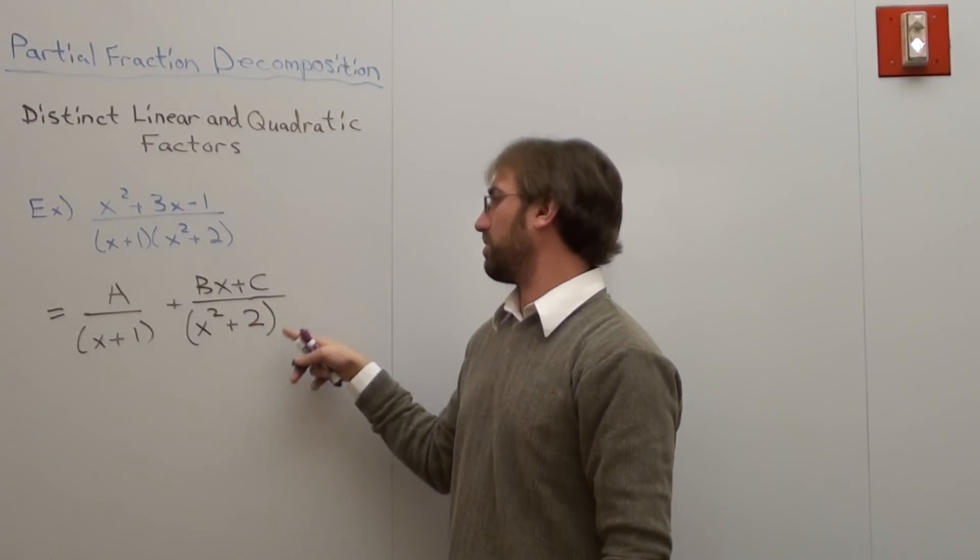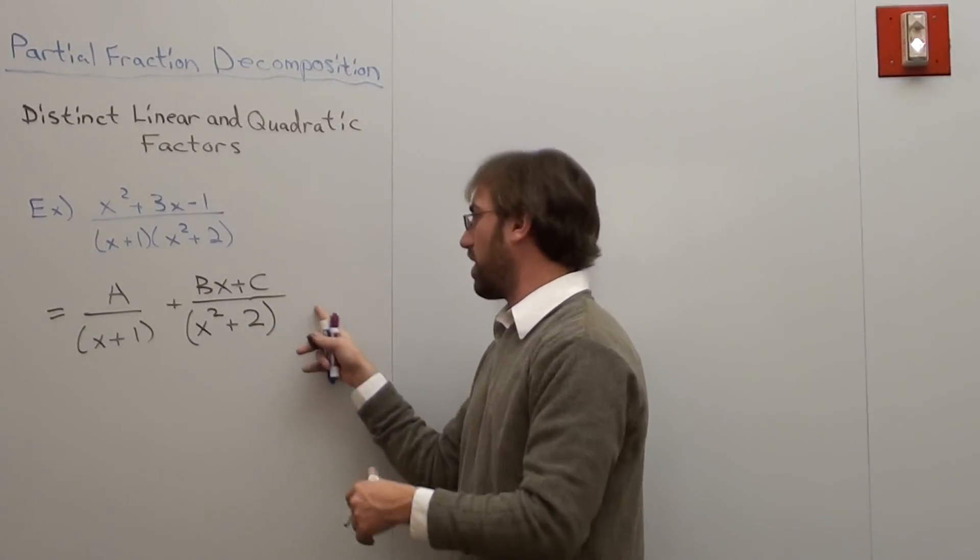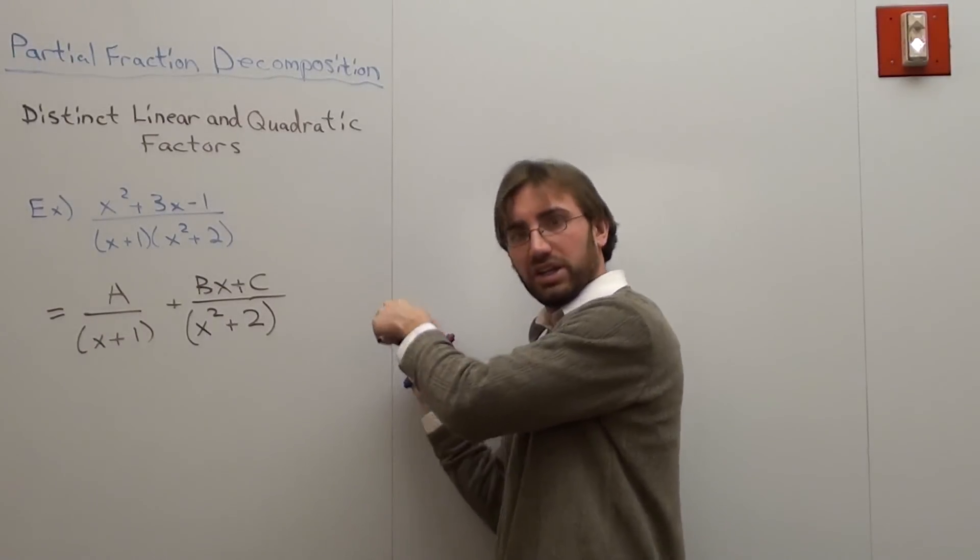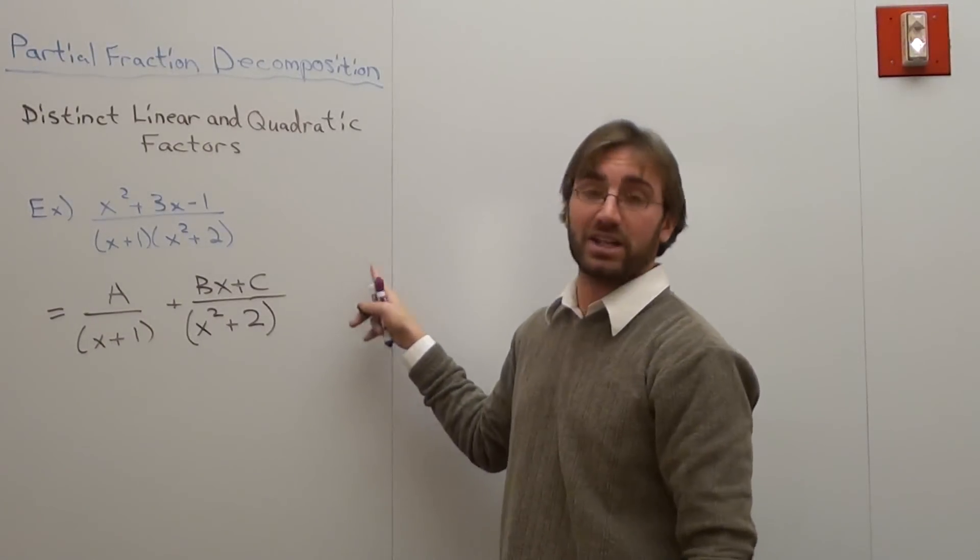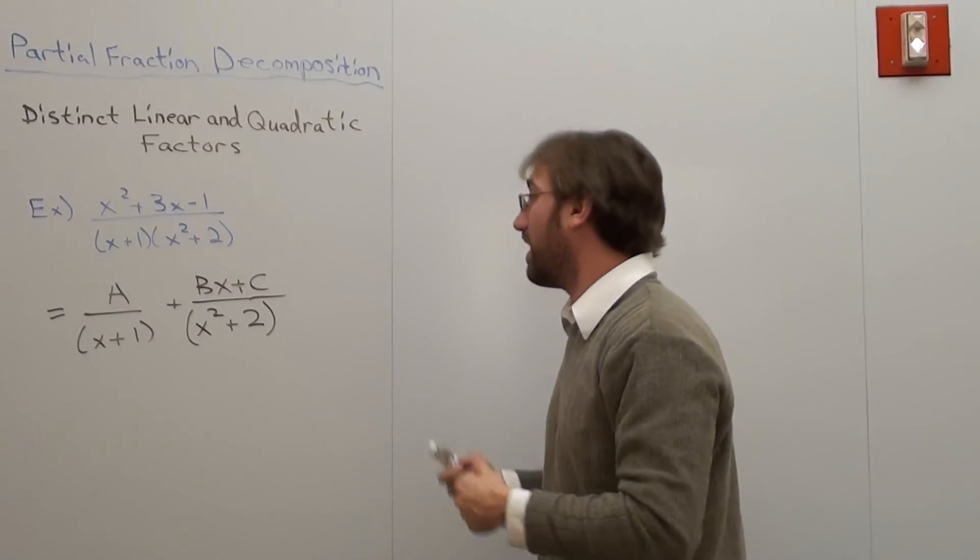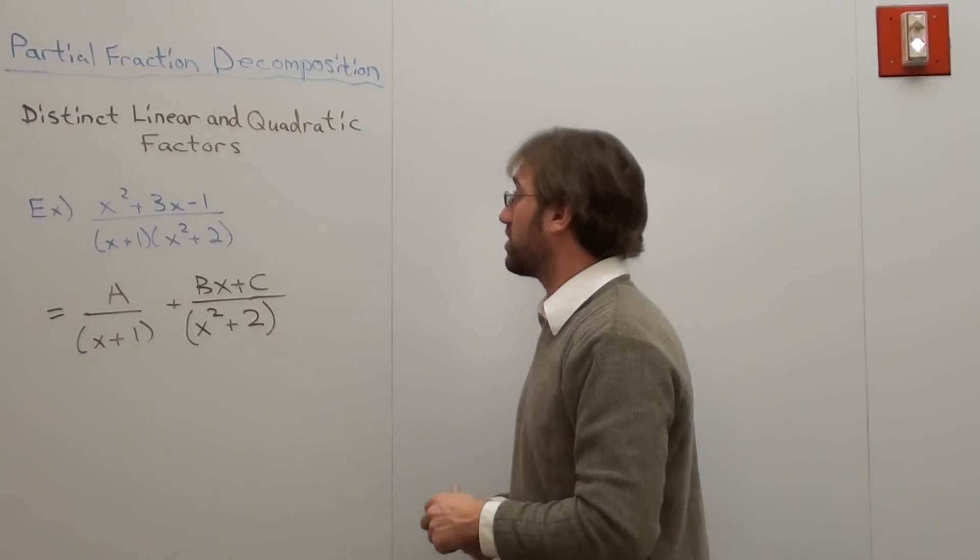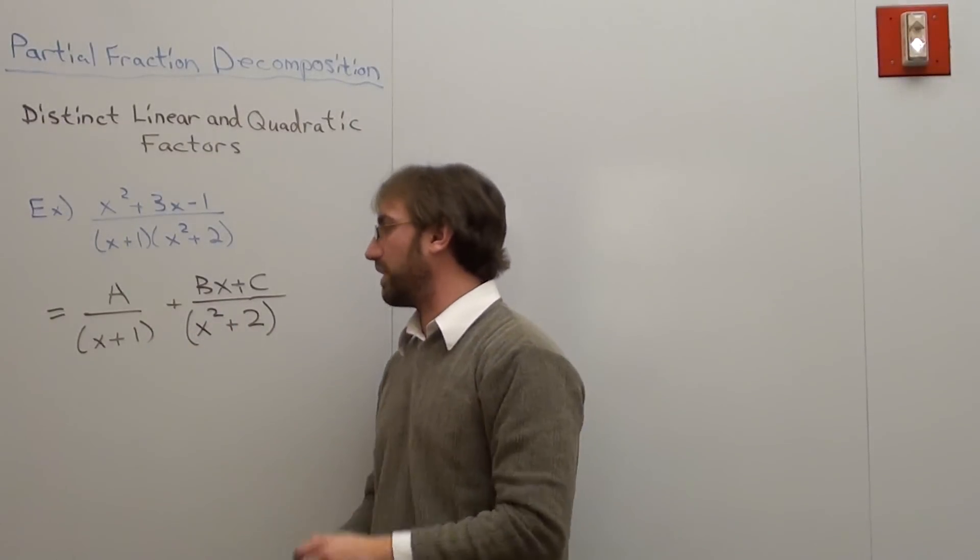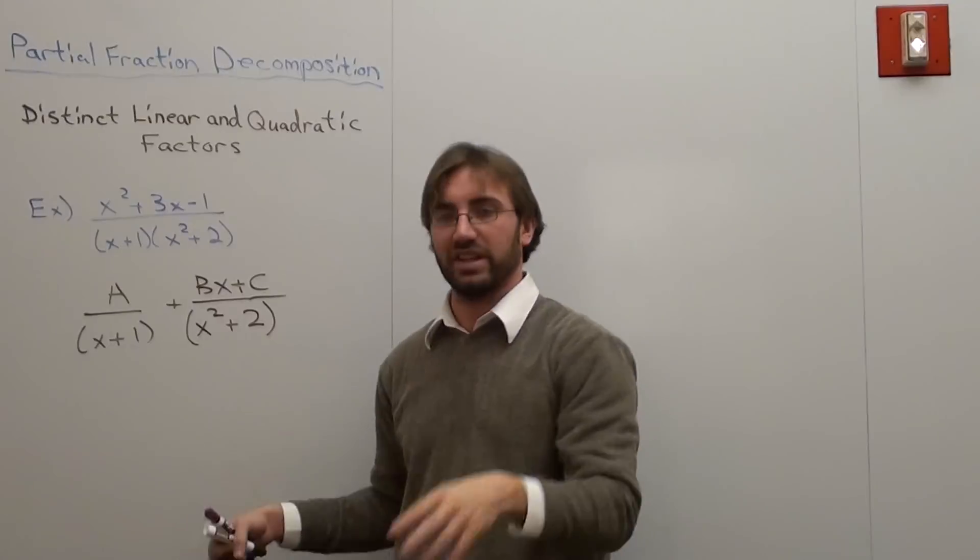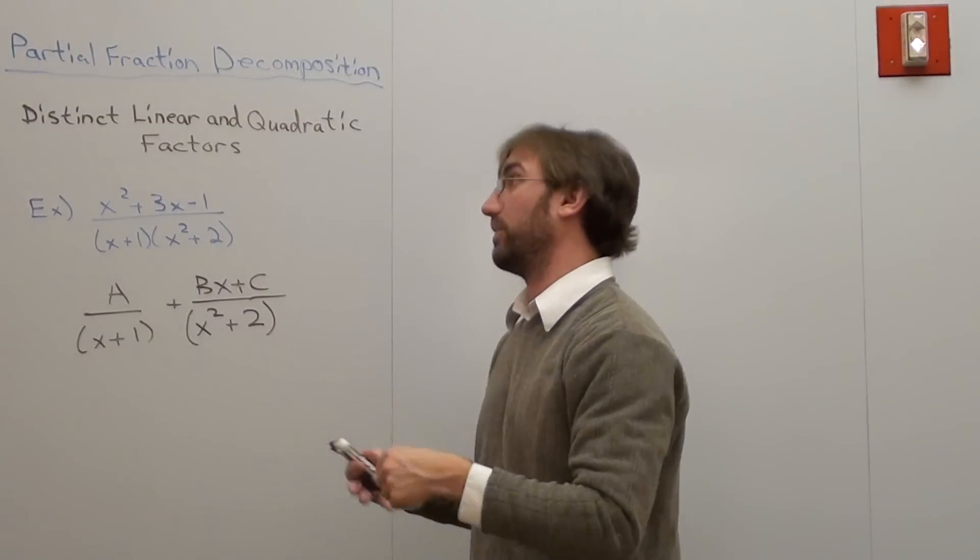And by the way, if it was x squared plus 2 quantity squared, then you'd have to write plus x squared plus 2 in quantity squared. And this one would be dx plus e. So that's really all there really is to it. I'm not going to sit there and do that, though. And that's all equal to this bad boy.